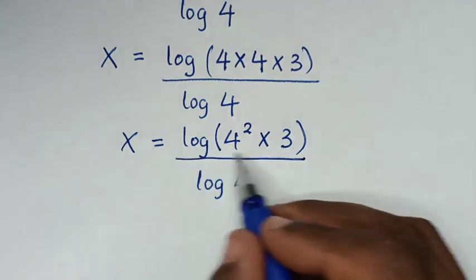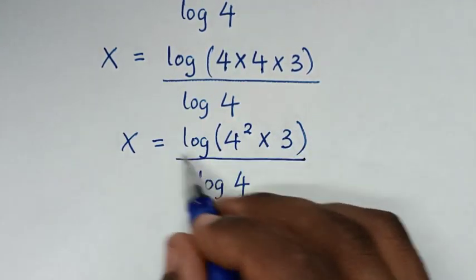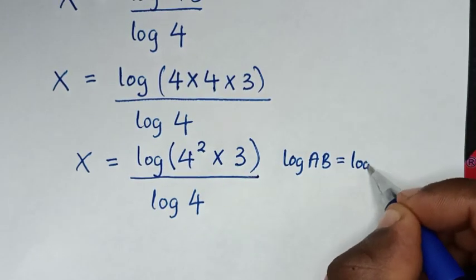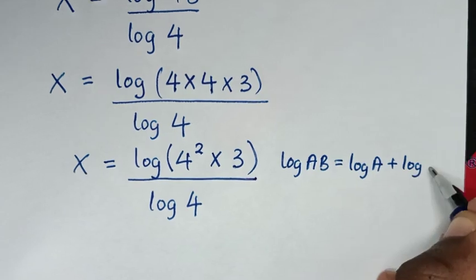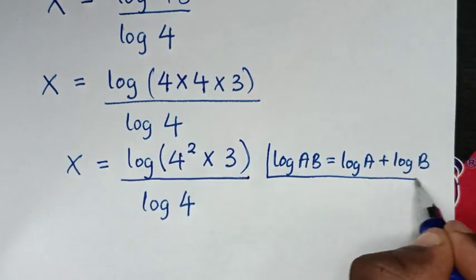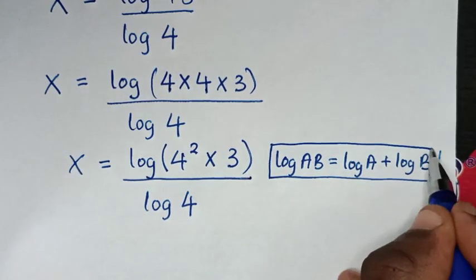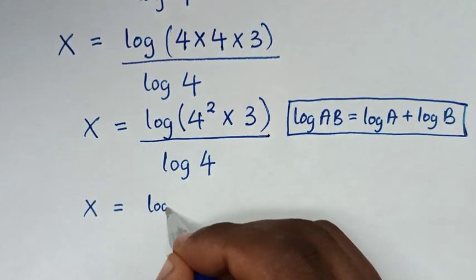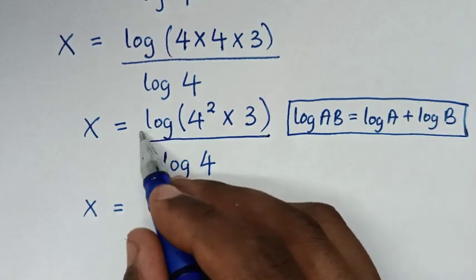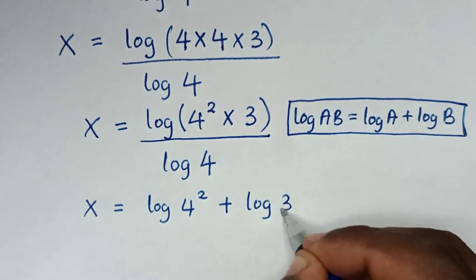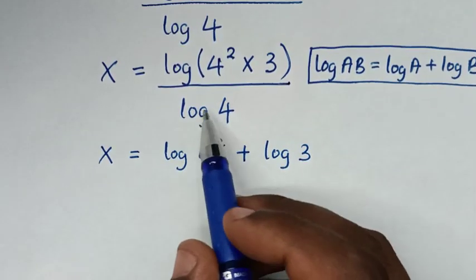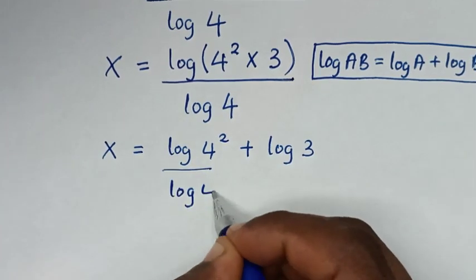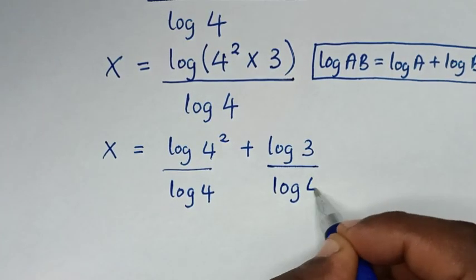Then, in the next step, log of 4 squared times 3 is in the form of log of a times b, which is equal to log of a plus log of b. So it will be x is equal to log of 4 squared plus log of 3, all divided by log of 4. This can be split over log of 4 in each part.